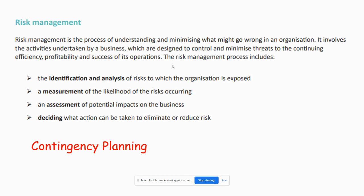Third, there's an assessment of potential impacts. If a machine breaks, how likely is it to break even with good maintenance? How much would it cost to repair? How much lost production time? How many customers would you lose? There are lots of knock-on effects from just one machine breaking. Fourth, deciding what action can be taken to eliminate or reduce the risk — such as insurance, proper maintenance, borrowing a machine from another company, or holding more product in the warehouse to fill demand while the machine is being repaired.